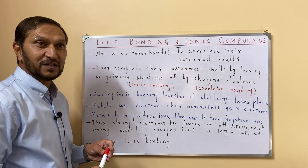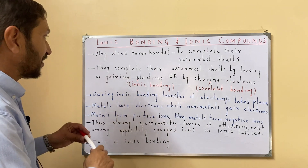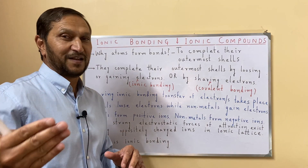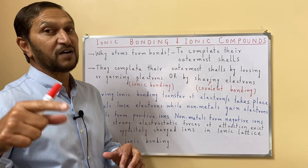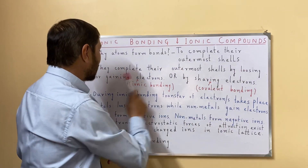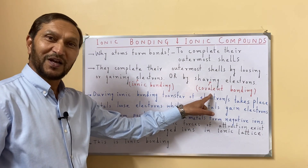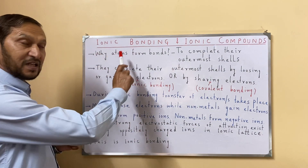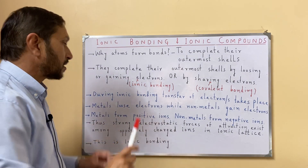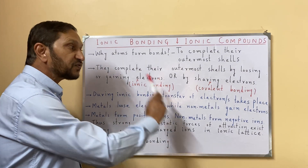Atoms complete their outermost shell, their valence shell, and for the purpose of completing it they either lose or gain electrons as in the case of ionic bonding, or they share electrons as in the case of covalent bonding. Today we are specifically talking about ionic bonding — how ionic bonding takes place.